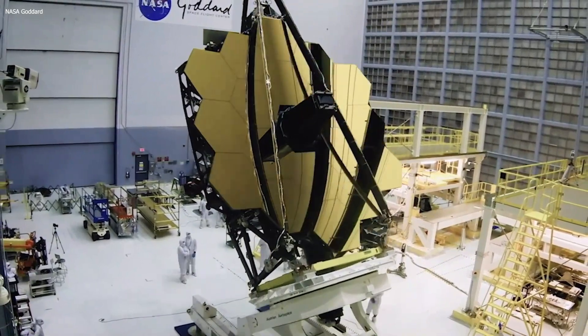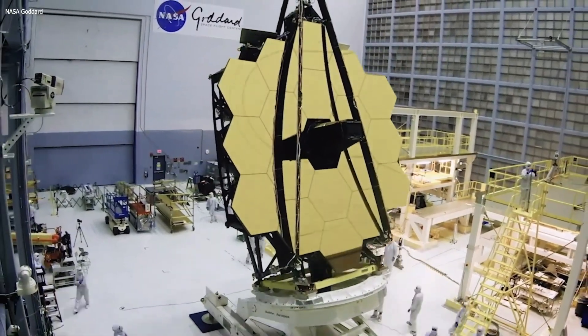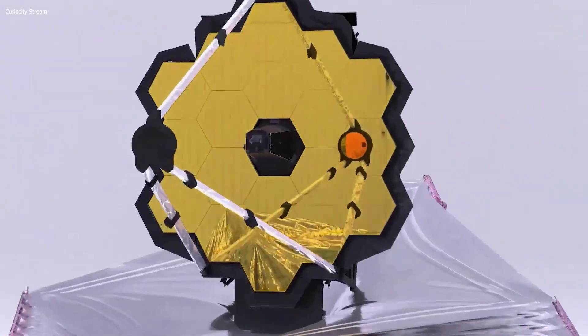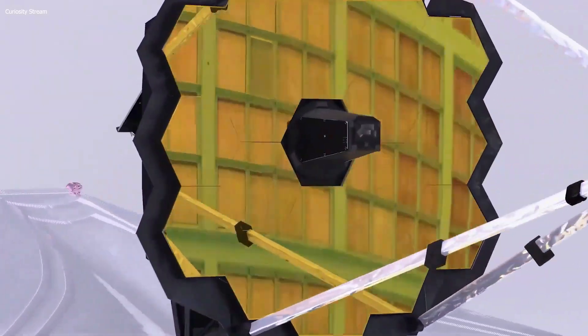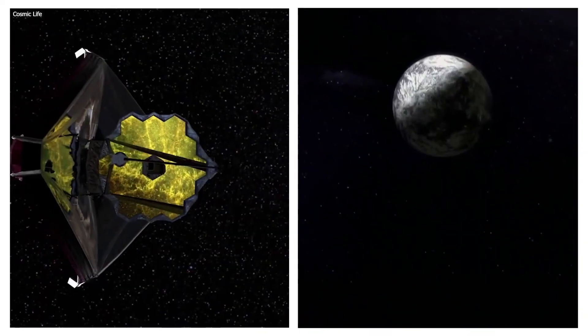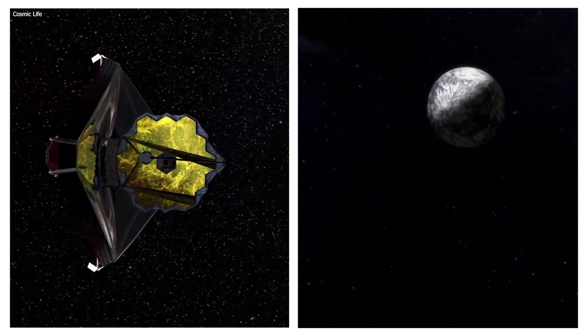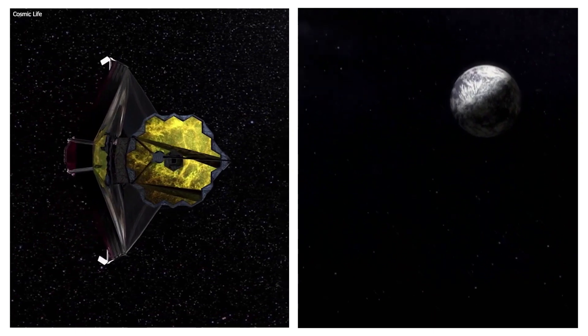Despite these challenges, the team successfully completed all 18 mirror segments and conducted rigorous testing to ensure that they met the required specifications. Things were officially at the point where you could actually picture the telescope getting into space successfully and getting the work it needed to be done.